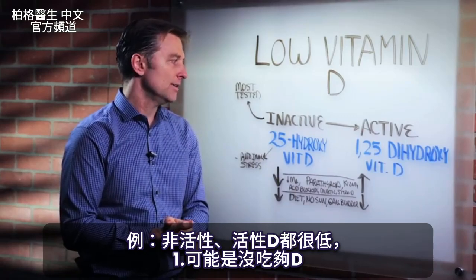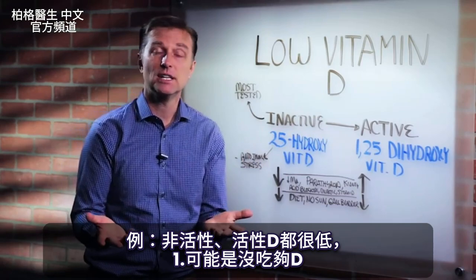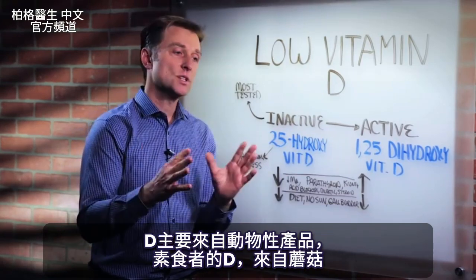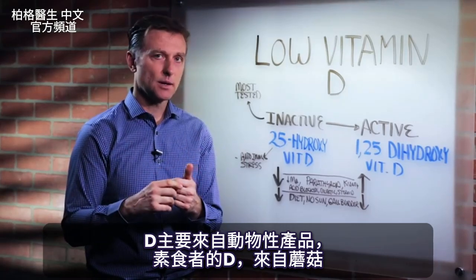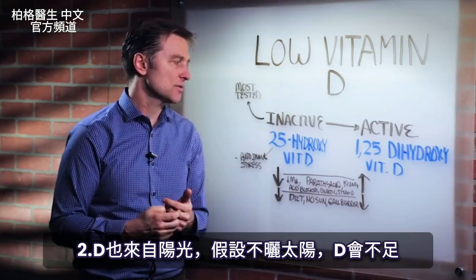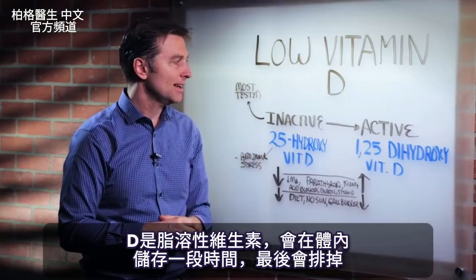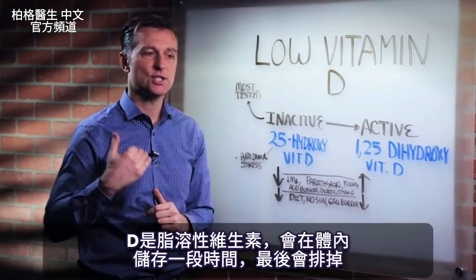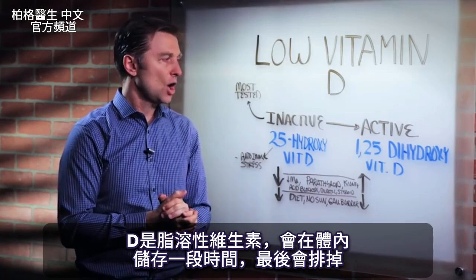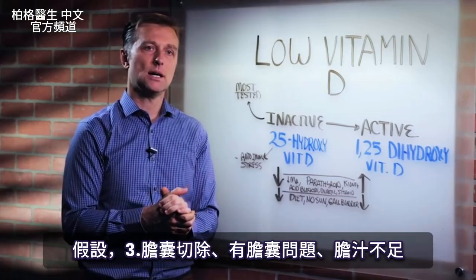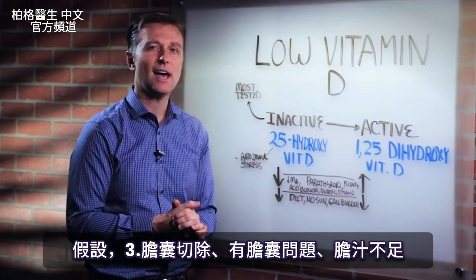For example, if you have low inactive and low active, that could be just because you're not consuming vitamin D in your diet, which is mainly animal products — or if you're a vegan, it could come from mushrooms — but it also comes from sun. So if you get no sun, it's going to be low. Because vitamin D is a fat-soluble vitamin, it gets stored in the body for a period of time, but you could eventually become depleted.